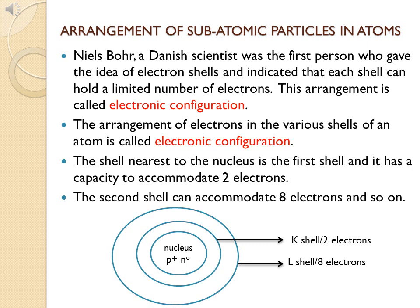To clarify this, we have Niels Bohr — a Danish scientist who was the first person to give the idea of electron shells and indicate that each shell can hold a limited number of electrons. This arrangement is called electronic configuration. So thanks to Niels Bohr, we now know how many electrons can be accommodated in each shell. The arrangement of electrons in the various shells of an atom is called electronic configuration.